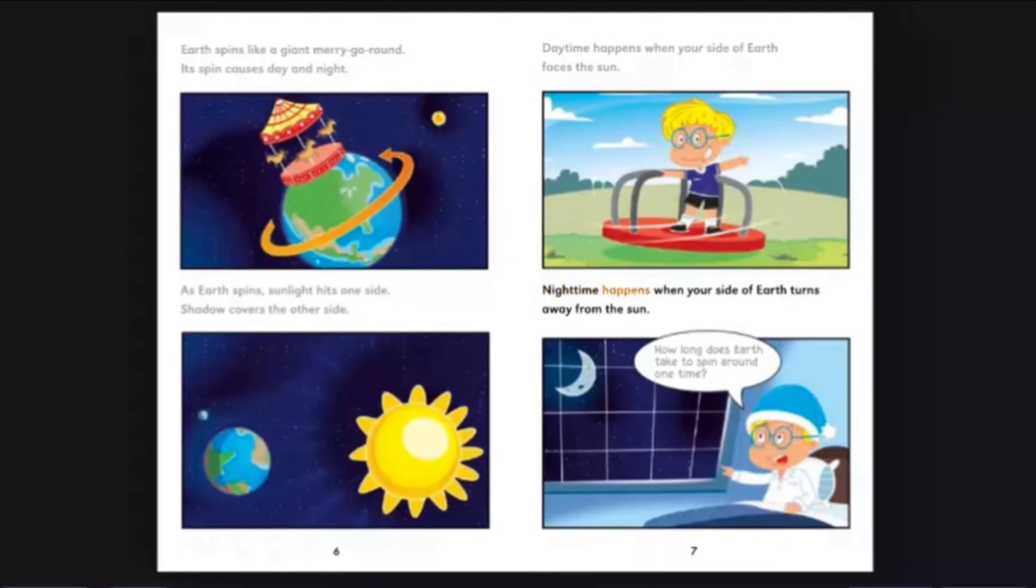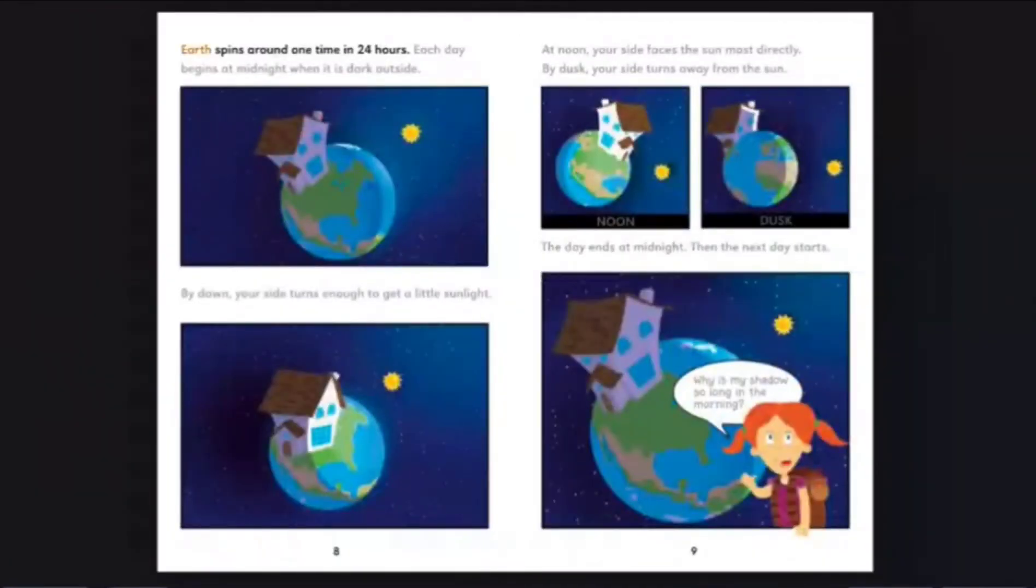Daytime happens when your side of Earth faces the sun. Nighttime happens when your side of Earth turns away from the sun. How long does Earth take to spin around one time? Earth spins around one time in 24 hours. Each day begins at midnight when it is dark outside.